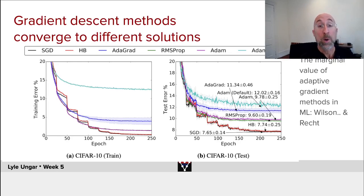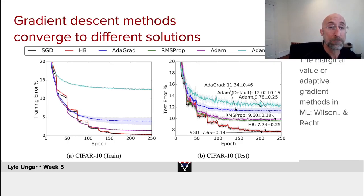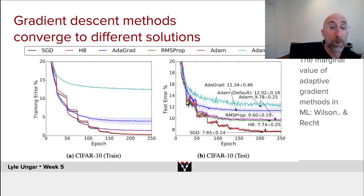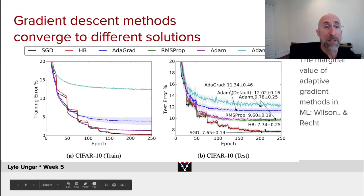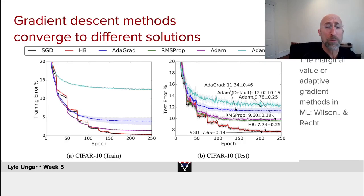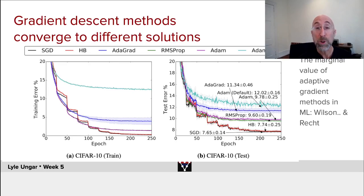Adam, not tuned out of the box, gives a training error and testing error of about 13 percent. If you pick better hyperparameters for it, it does a better job — the purple line is more accurate. The difference between the best method, pure stochastic gradient descent, versus the worst, raw Adam, is almost a factor of two: 7 percent testing error versus 13-14 percent. So how you do the convergence makes a lot of difference in what you converge to.